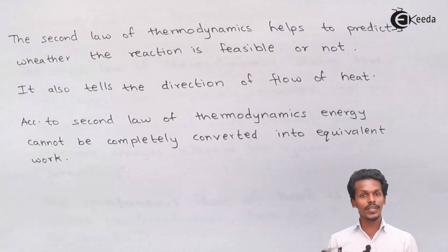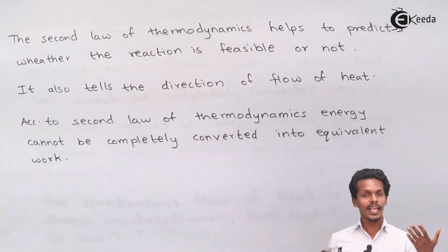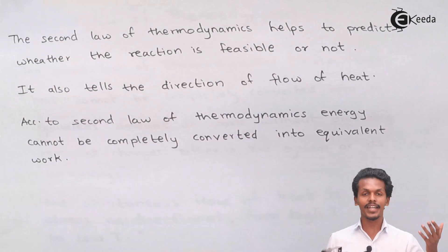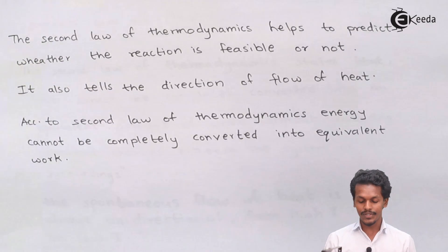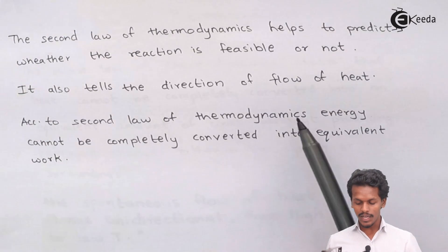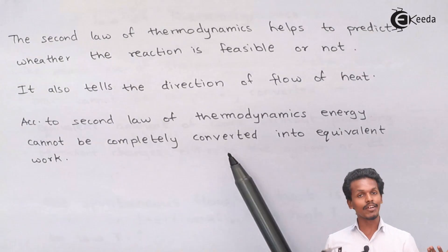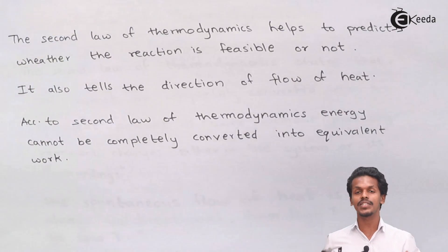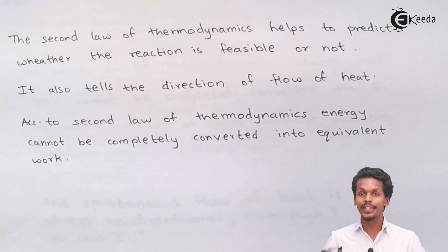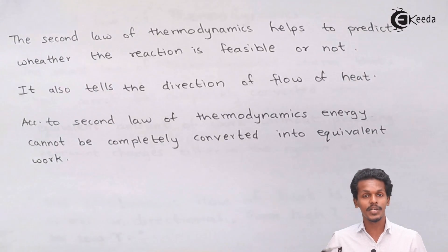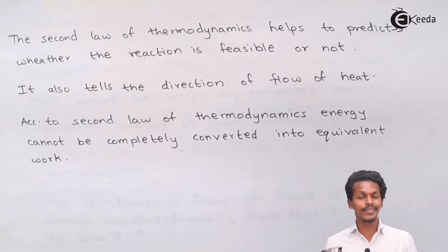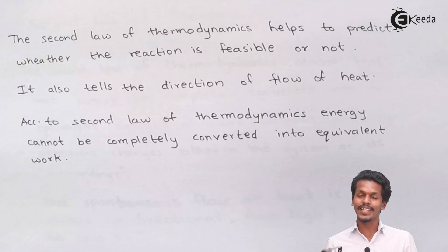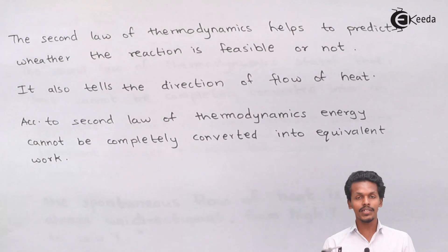The second law also gives information about the flow of heat — heat flows from a body at high temperature to a body at low temperature. According to the second law of thermodynamics, energy cannot be completely converted into equivalent work. There would be certain kinds of changes that will occur in the system or in the surroundings.